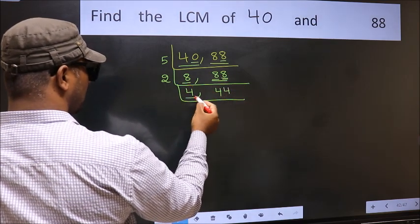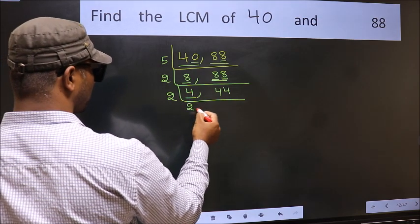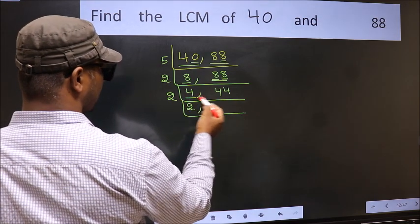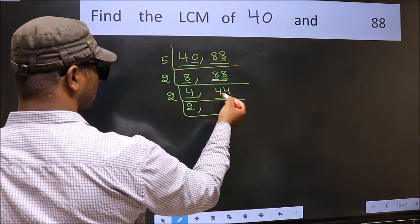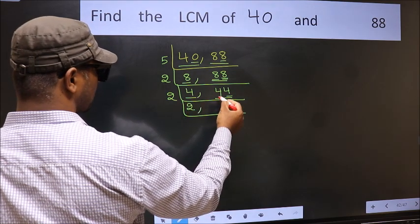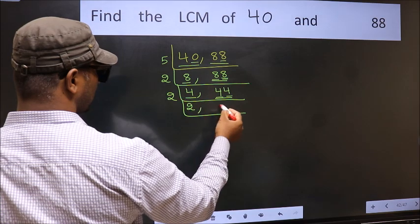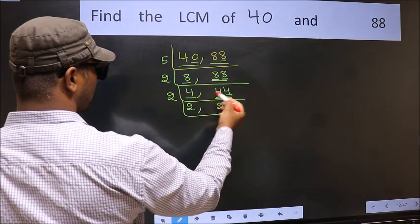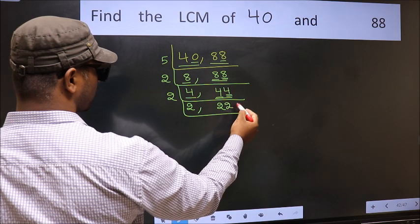Now here we have 4. 4 is 2 twos are 4. The other number is 44. Last digit 4 is even, so this is divisible by 2. When do we get 4 in the 2 table? 2 twos are 4. The other number 4: when do we get 4 in the 2 table? 2 twos are 4.